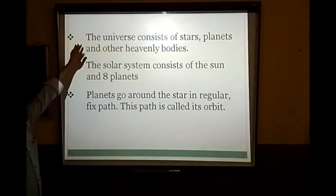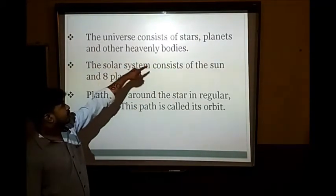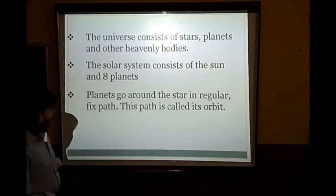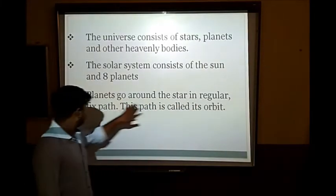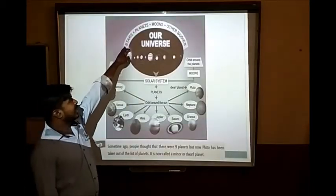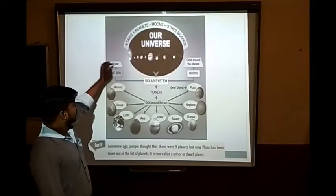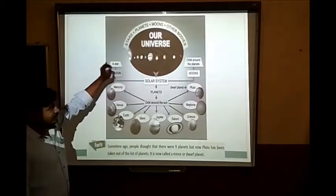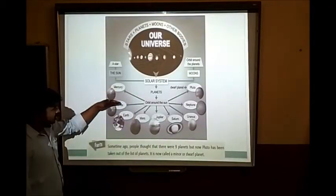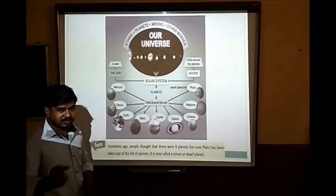The universe consists of stars, planets and other heavenly bodies. The solar system consists of the sun and eight planets. Planets go around the star in a regular fixed path — this path is called its orbit. The planets of our solar system are Mercury, Venus, Earth, Mars, Jupiter, Saturn, Uranus, Neptune, and Pluto, all moving around the sun.